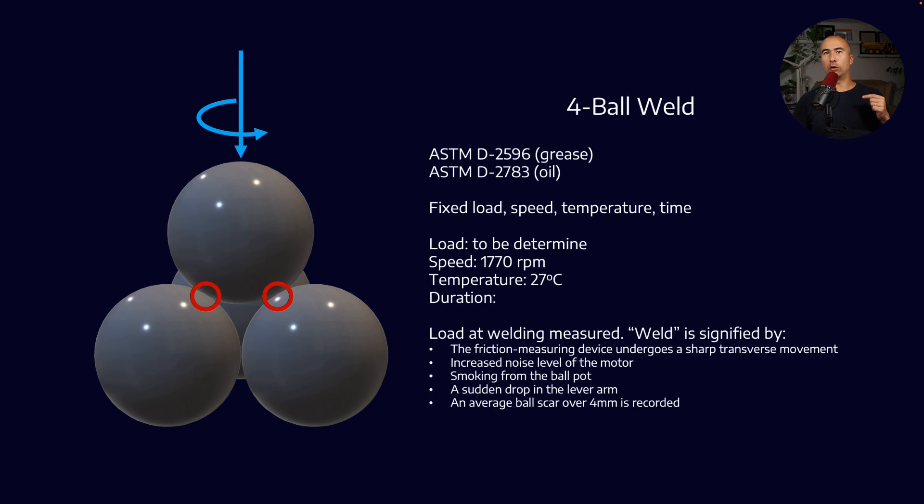Now, you can actually vary any of these numbers, right? We could take the speed up to 1600 RPM. We could vary the temperature, but using the same apparatus, but these just would not conform to the ASTM's test methods. So that's the four ball wear test.